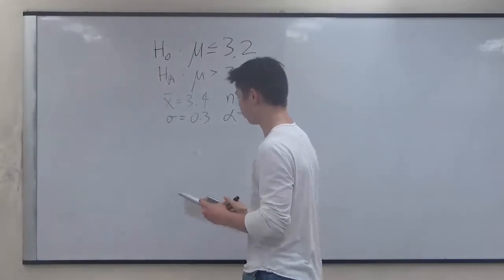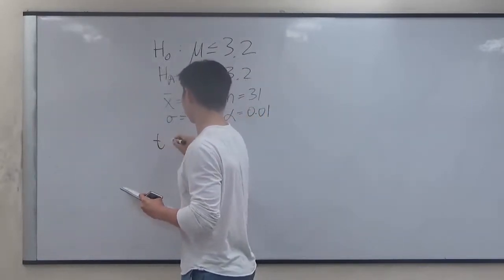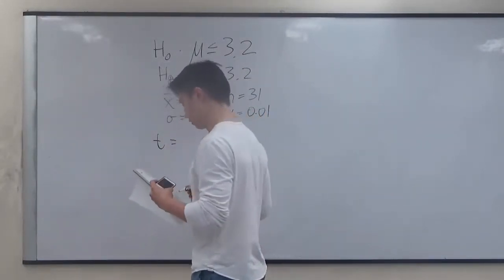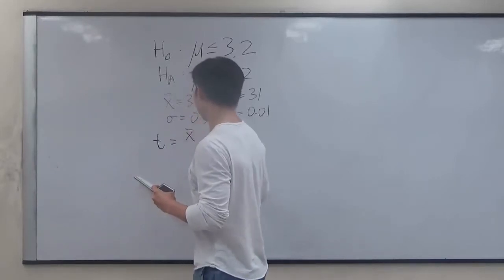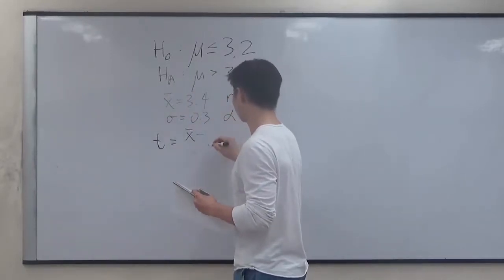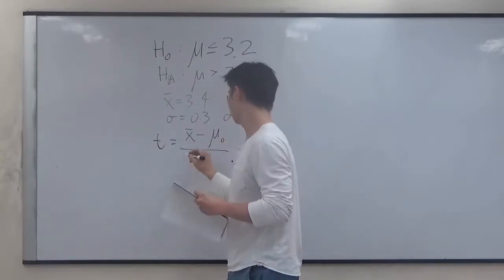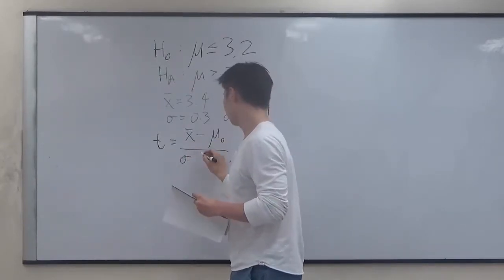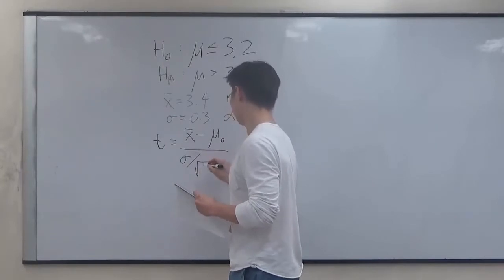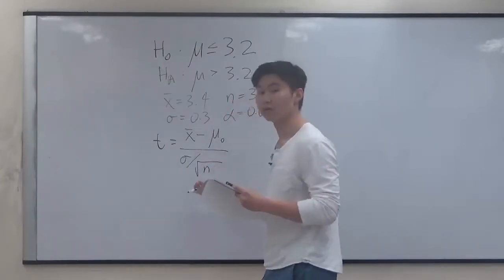Now we can write our formula for the test statistic t, because this is a t-test. That is equal to the sample mean minus the given mean over the sample standard deviation divided by the square root of the sample size.